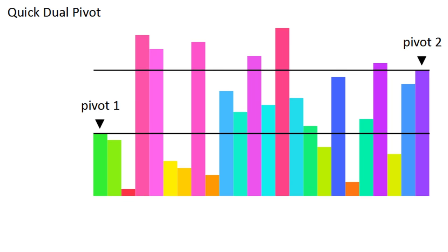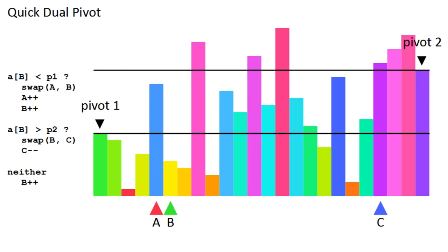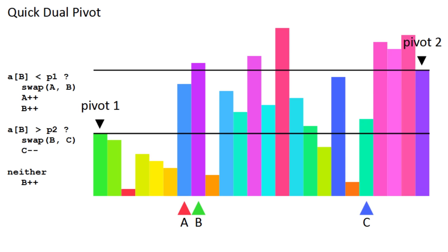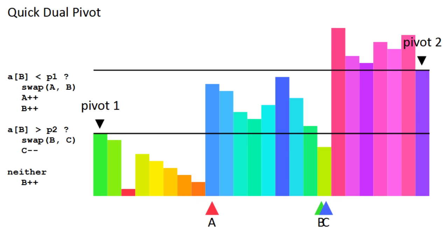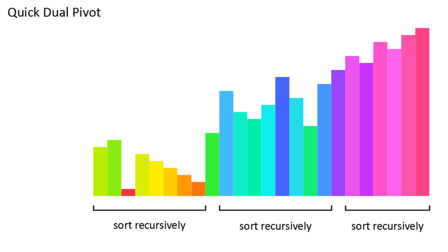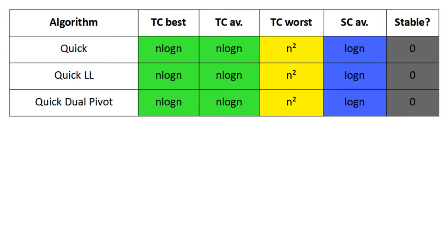Now you need to keep track of three positions. A and B start at the start, and C starts at the end. Then you check the value at B on loop with the following conditions. If it's smaller than pivot one, swap it with A, and move both A and B to the right. If it's bigger than pivot two, swap with C, and move C to the left. If it's neither, then simply increase B. Once B passes C, you can move the pivots to the boundaries, and then it's recursion time. The time complexity is still the same though.